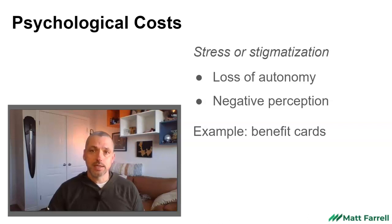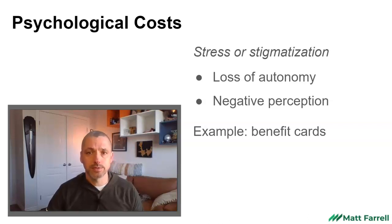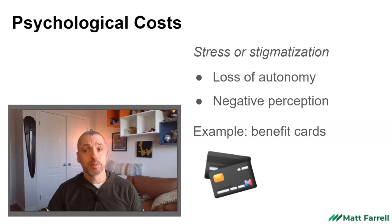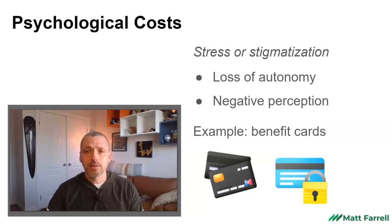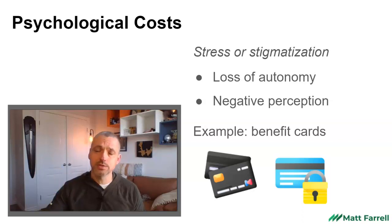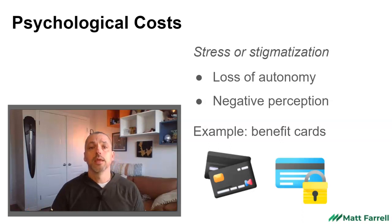One example is in the United States. Some benefit cards — supplemental nutrition assistance, also called food stamps — the way that program is administered creates a bit of a stigma. Most people, when they go shopping, will use a debit card or a credit card. However, benefit cards are a different color, they look conspicuous, and they're restricted — you can't use them on some things. Having to use that, having those feelings of alienation or stigmatization, imposes a psychological cost on the user.